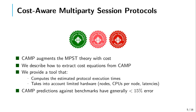CAMP augments the multiparty session type theory with a notion of cost, which are estimated execution times. We describe how to extract cost equations from these extended multiparty session protocols and provide a tool that computes the estimated protocol execution times and takes into account limited hardware such as nodes, CPUs per node, or the communication latencies between different nodes. We evaluate the CAMP predictions against benchmarks and achieve generally less than 15% error with our predictions.